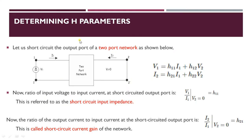To determine the H parameters of a two port network, in the first step the output terminals are shorted to determine two H parameters, and next the input ports are open circuited to obtain the remaining two parameters. Hence we get all four H parameters, the hybrid parameters.